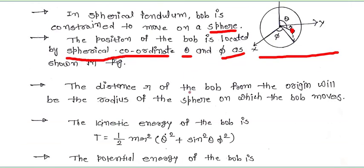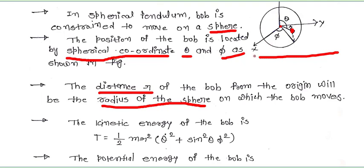That is the spherical coordinates theta and phi. The distance R of the bob from the origin will be the radius of the sphere on which the bob moves. The distance from the origin to the bob, represented as small r in the figure, comes out to be equal to the radius of the sphere.